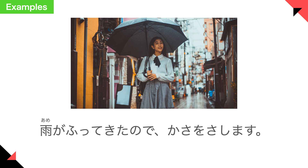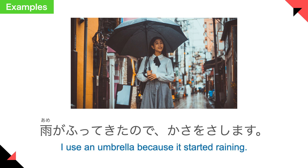雨が降ってきたので、傘をさします。 I use an umbrella because it started raining. AME means rain; 雨が降る means it started raining. So 雨が降ってきたので means because it started raining, and 傘をさします means I use an umbrella.